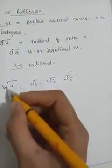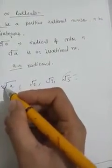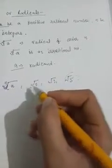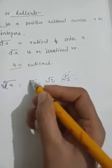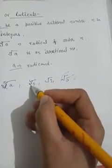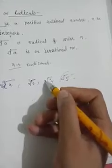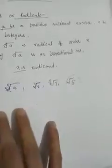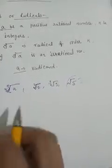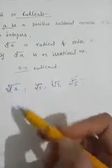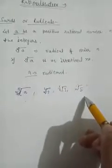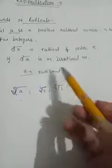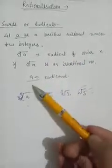Whenever no index number is written in the radical symbol, it is a square root. If it has index 4, this is called the fourth root. If we write the fifth root of 3, these are irrational numbers and these are also surds. So if it is an irrational number, it can be called a surd or radical.